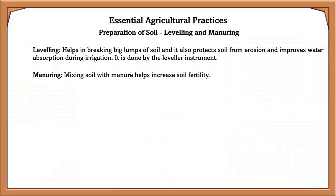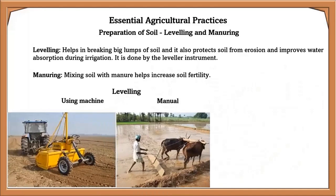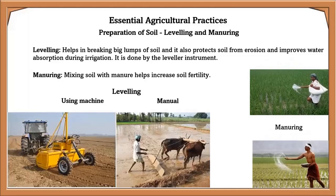Leveling helps in breaking big lumps of soil, protects soil from erosion, and improves water absorption during irrigation. Manuring involves mixing soil with manure to help soil fertility.